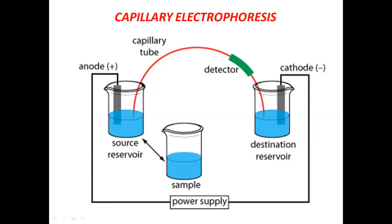After application of the electric field by the power supply device, an electric field is generated in the capillary tube. The buffer starts to move via electroosmotic mobility, and electrophoretic mobility of solutes is initiated. Dependent upon their charge-to-size ratio, solutes migrate towards the destination reservoir and are detected by a detector placed just before the destination reservoir.